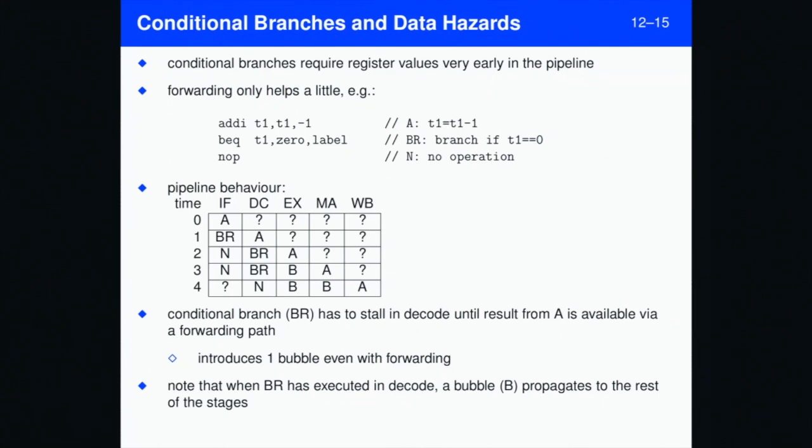We need to wait until we actually have the result from doing that add before we can determine which way the branch will operate. And basically, we have to just delay things in decode. And there is then a question as to whether there is some sort of forwarding path that allows the result of T1 to be sent to the branch unit early to avoid too many bubbles.